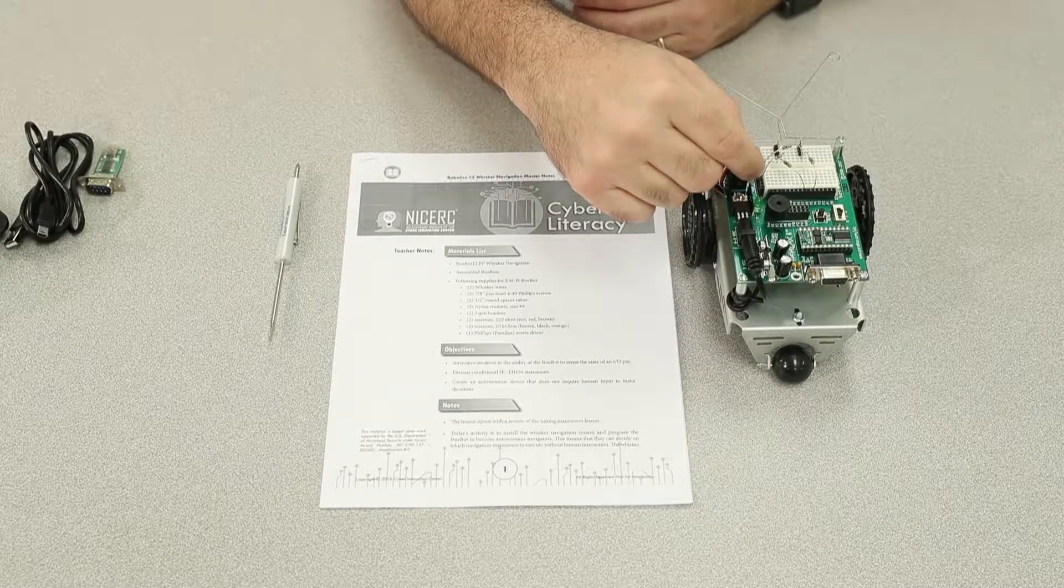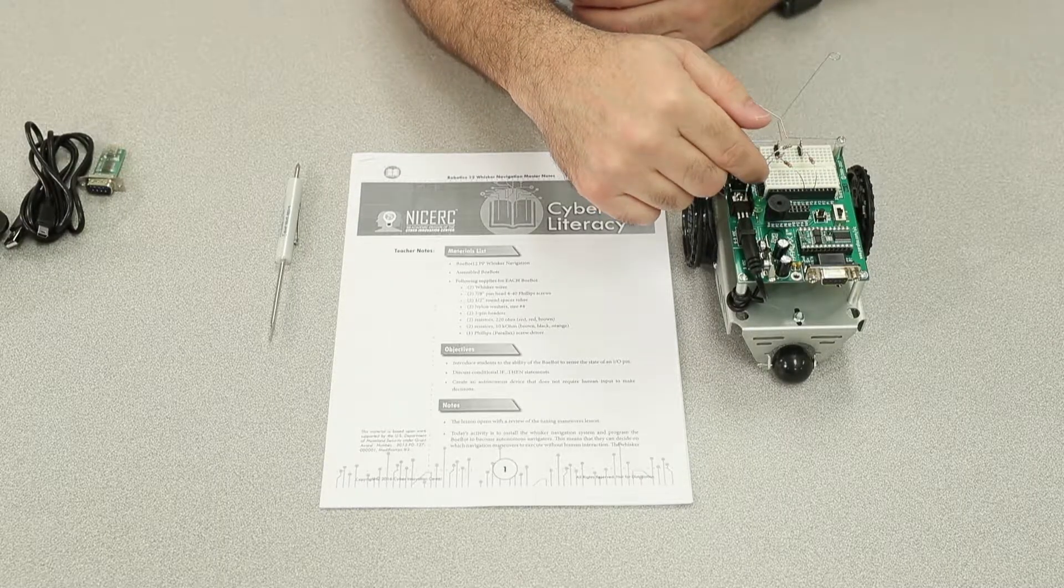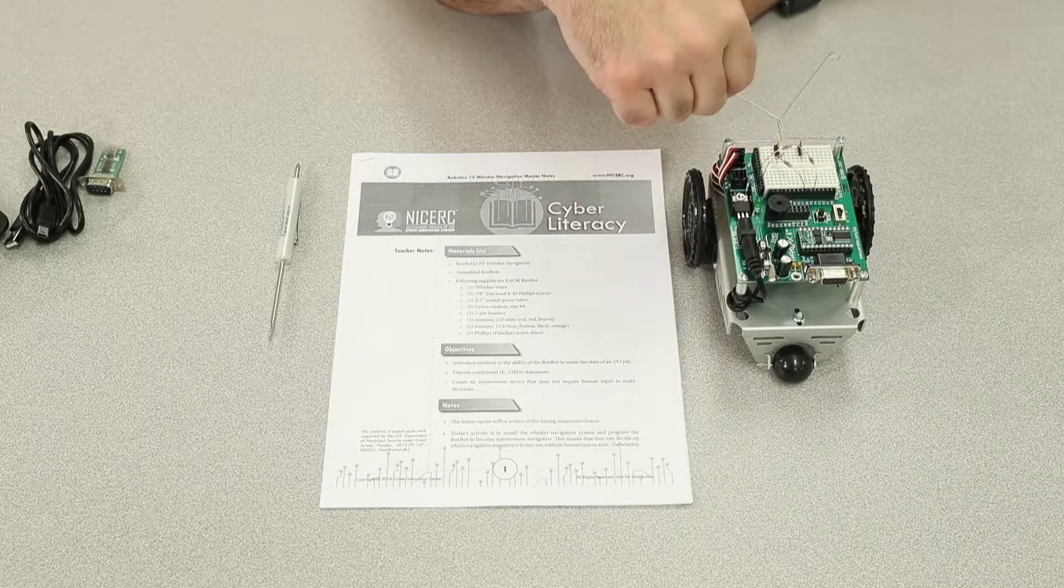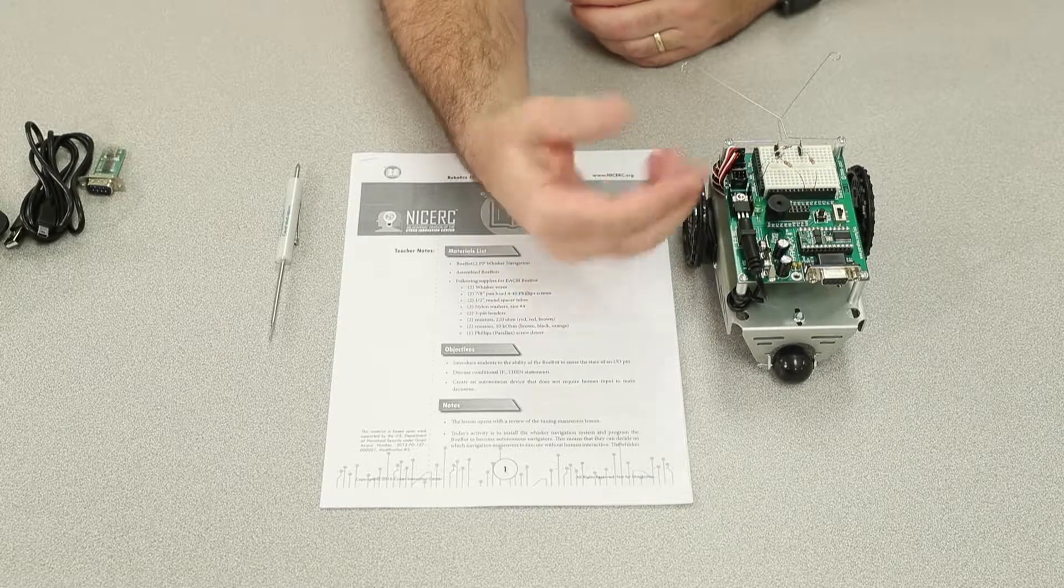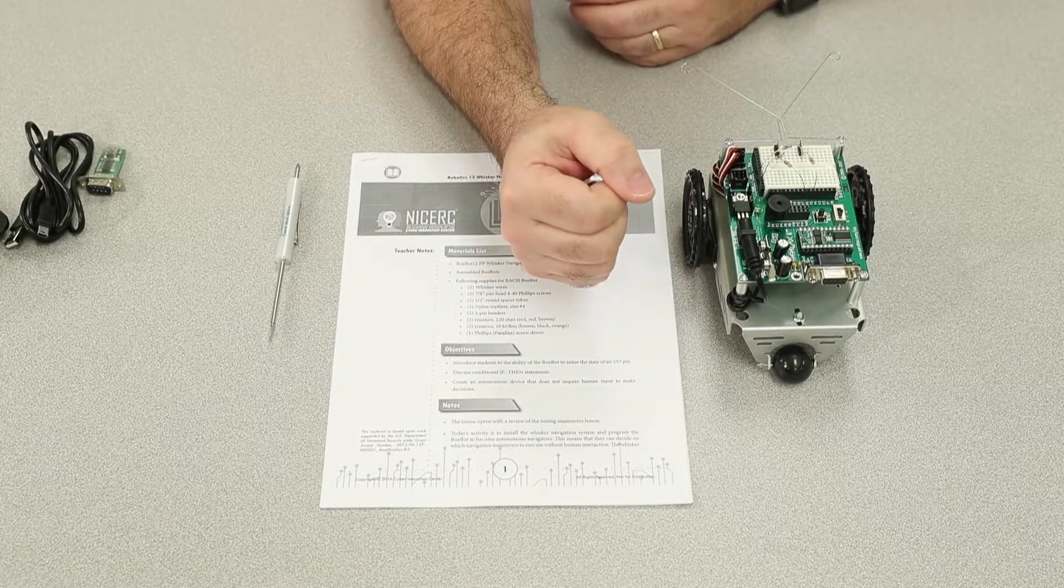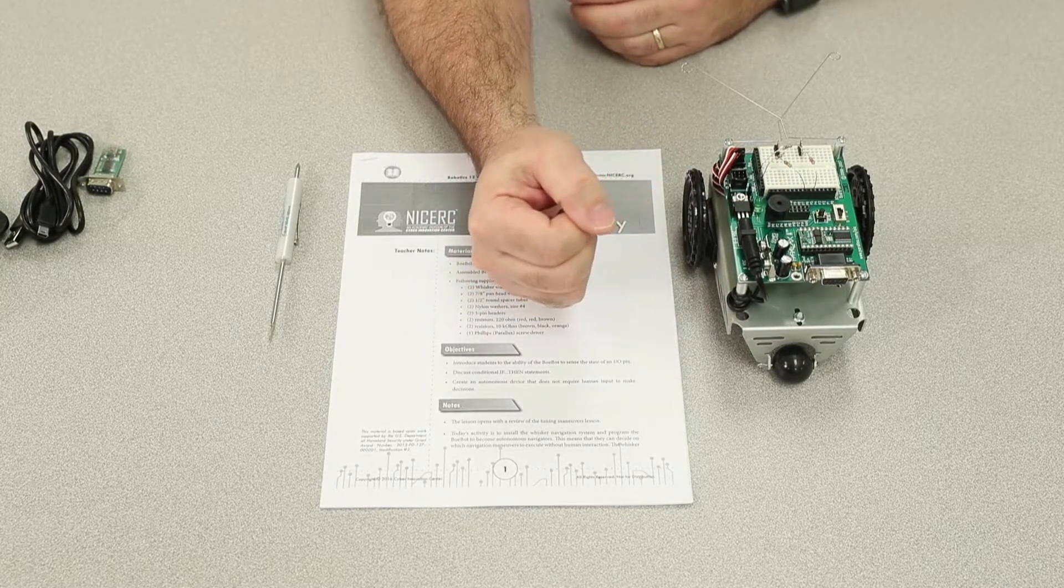In the Whisker Navigation build, the objective is to identify when a signal coming from VDD to the pins is being diverted to ground by way of these whiskers, which are connected to the chassis. So when the build is complete, it will look something like this. We're going to take it apart now, so we're going to see how it fits back together.